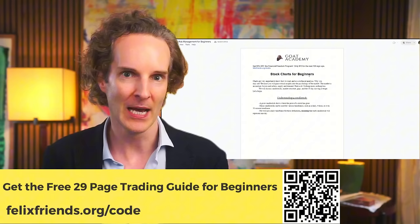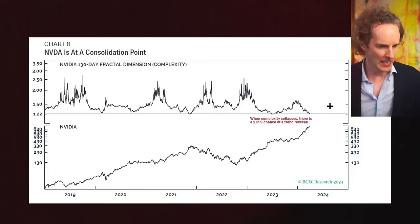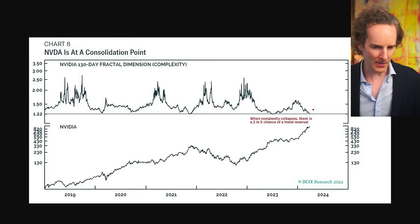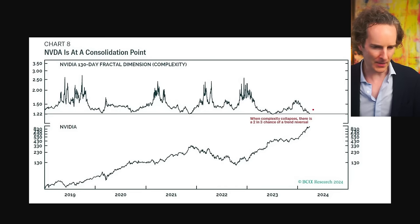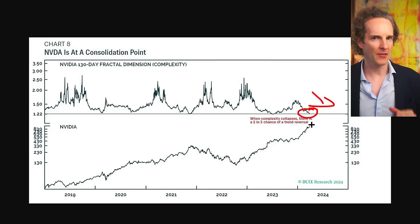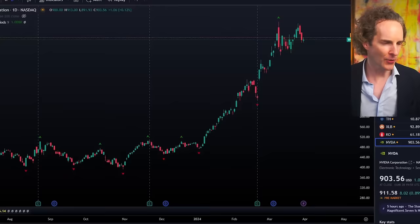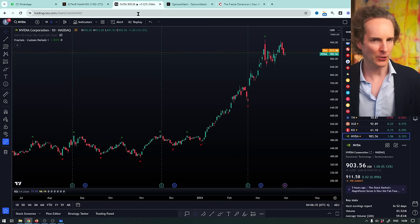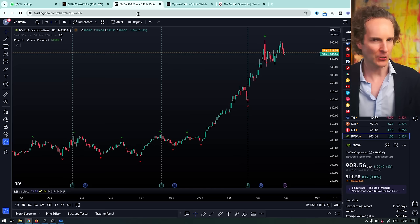You get the full 29-page walkthrough to take you from total beginner to pro. So if you zoom out, what we're seeing here is that we're at a point where the indicator is coming down, and that's saying to you this is more likely going to be a consolidation rather than a move up. And you can pull this up in tradingview.com, which is a free website.